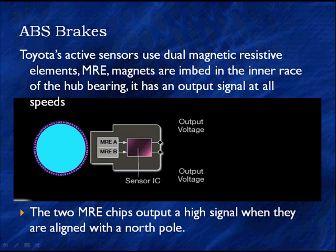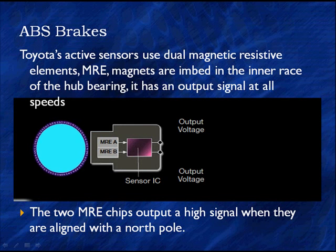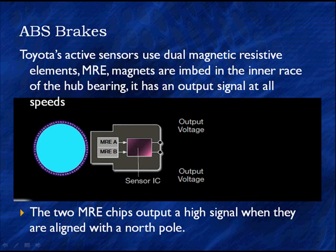Here's the way magnetoresistive elements work. Toyota has a very unique system. Their active sensors use dual magnetic resistive elements — MREs they call them, or magnetostrictive in other cases. The magnets in this Toyota example are embedded in the inner race of the hub bearing. It has an output signal that's pretty constant at all speeds. The two chips output a high signal when they align with the north pole.